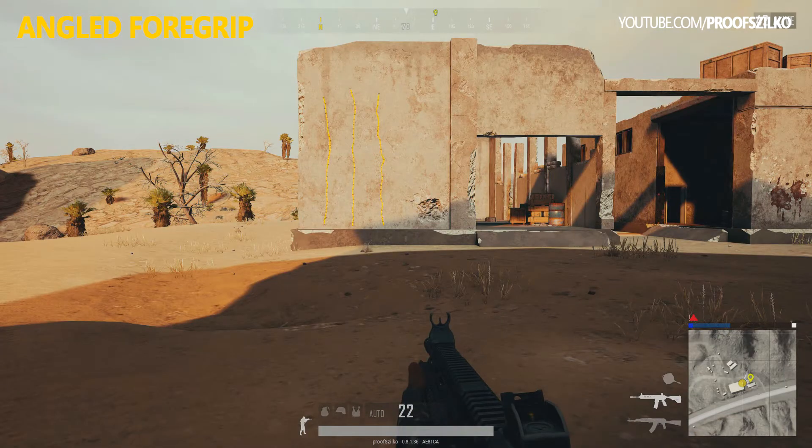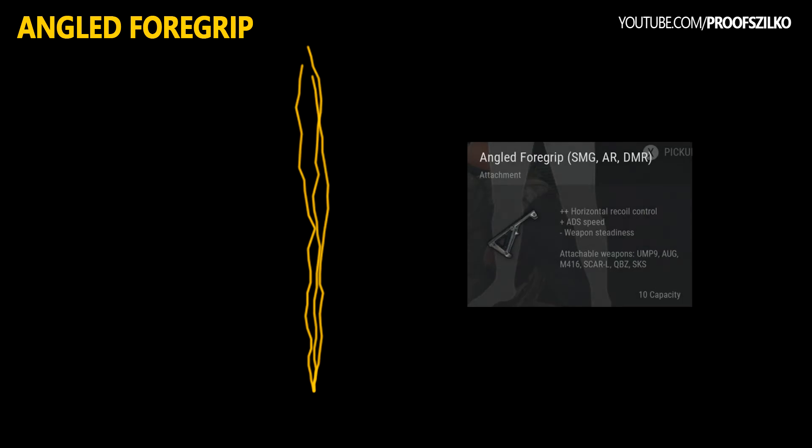Moving on to the angled foregrip, after aligning the spraying patterns here as well, it's clear that the vertical recoil is much higher than on the vertical grip and additionally there's a significant horizontal recoil as well. The data sheet says that there's a plus plus for horizontal recoil control, a plus on ADS speed, and a minus for weapon steadiness, attachable to UMP-9, AUG, M416, SCAR-L, and SKS.